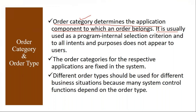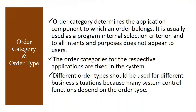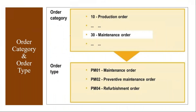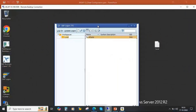Order category is usually used as a program-internal selection criteria and does not appear to the users. Normally, order category will not appear at the front end to users. All the service orders we covered earlier belong to category 30. I will show you this in the system.